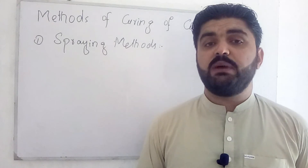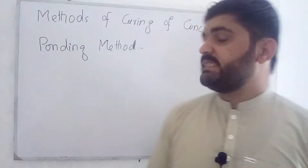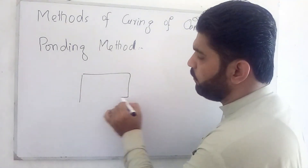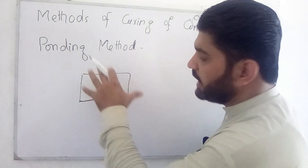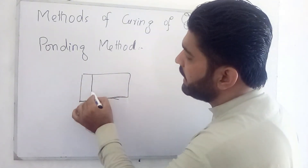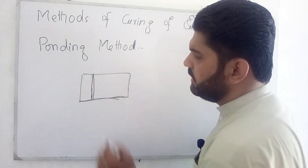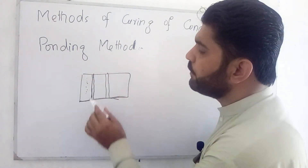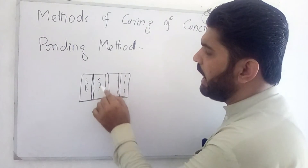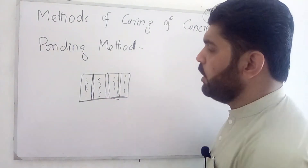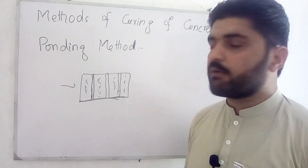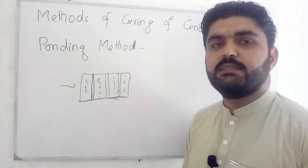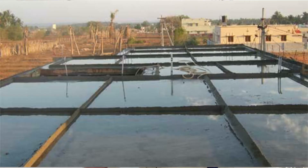The second method is the ponding method. If we have done a slab concrete work, we make a strip boundary around it and then fill it with water so that water spreads over the entire horizontal surface. The ponding method of curing is used for slab work, floor work, or any horizontal surface of freshly placed concrete, as shown in the picture.